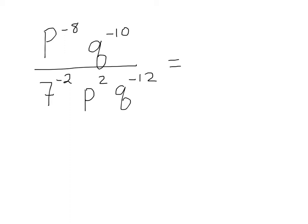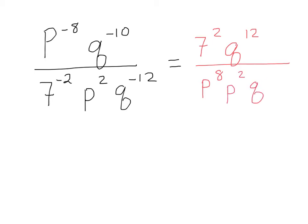So I get 7 to the second on top, and q to the twelfth on top, over p to the eighth on bottom, p to the second on bottom, and q to the tenth on bottom.